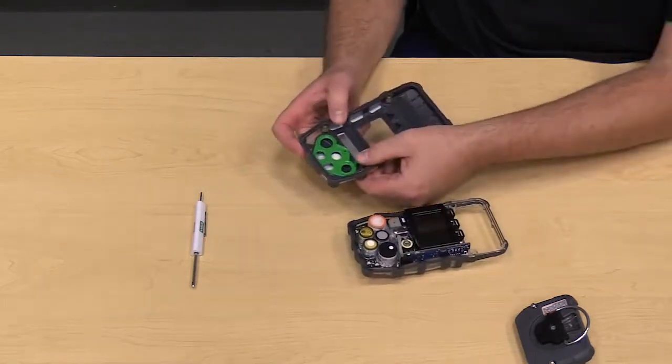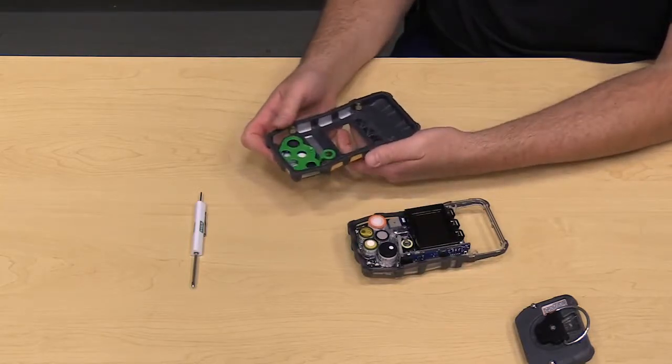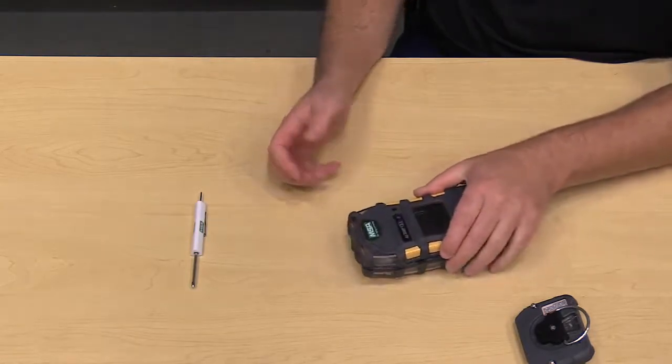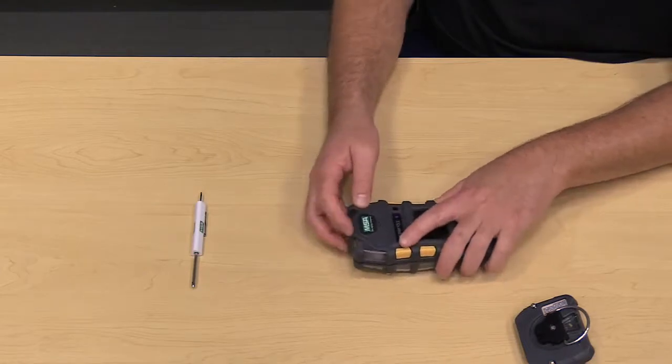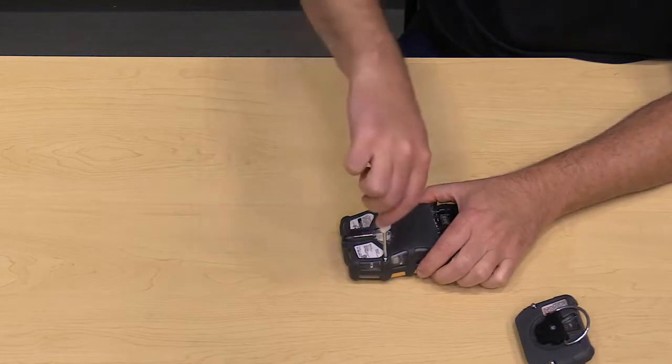We also want to make sure that this gasket is snug in its housing. Now we can go ahead and put that front housing back on, flip the gas detector over, and begin to tighten the screws.